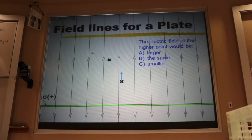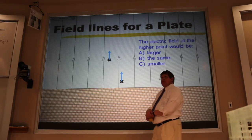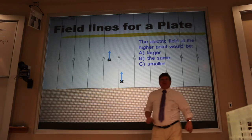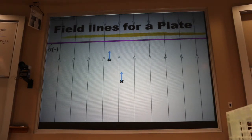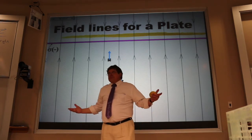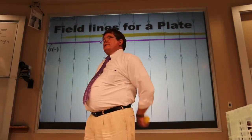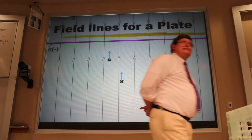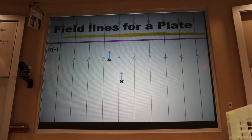First argument: what if I covered up that positive sheet so you couldn't see it? You can't tell if it's a positive sheet below or a negative sheet above. If it were a negative sheet, you'd want the field closer to the sheet to be bigger. But you'd get the same field lines from either source, so you can't say which is bigger—and they must be equal. That's my first attempt.